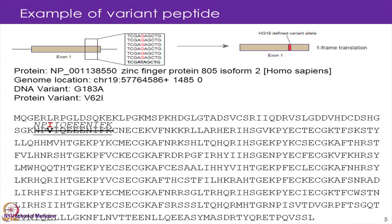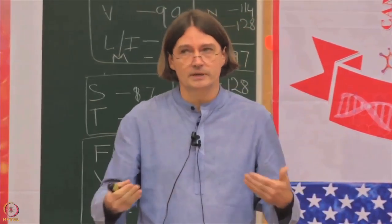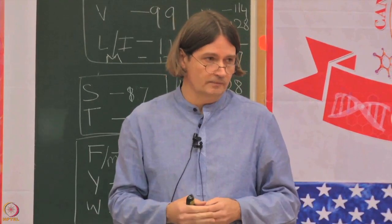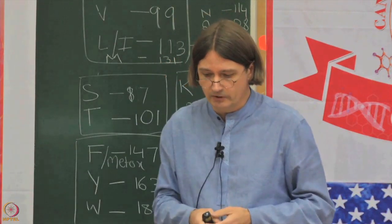If we go through and take all the single nucleotide variants that we see in the genome and determine which extra tryptic peptides we get, we can then make a larger database. This is probably the simplest change on the genomic level that propagates to the proteome.